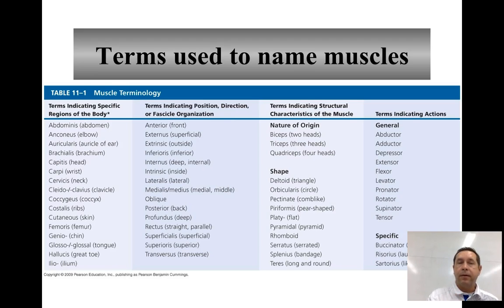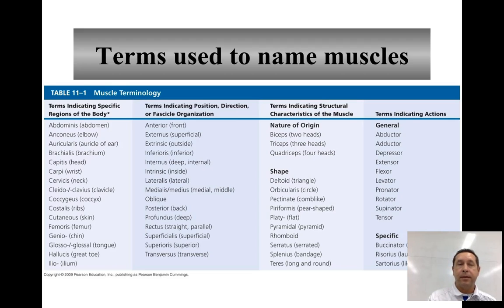As far as naming terms go, Table 11.1 in your textbook is a great place to look. You have terms that specify the region of the body — like the abdominus muscles in the abdominal region — as well as terms that indicate position, direction, or organization, such as internal, external, lateralis, oblique, and so on.